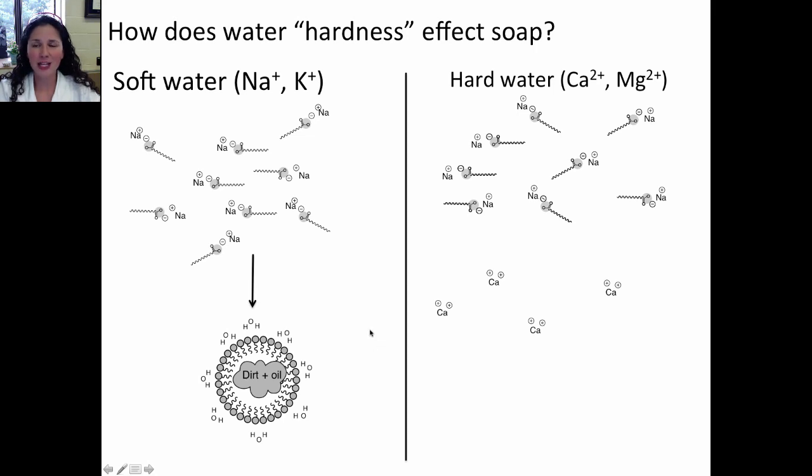Hard water, on the other hand, has more divalent ions, which means that they have more calcium and magnesium ions, which have two plus charges, or positive two charges. The calcium and magnesium, or any ion that has a plus two charge, will interact differently with these fatty acid ions.